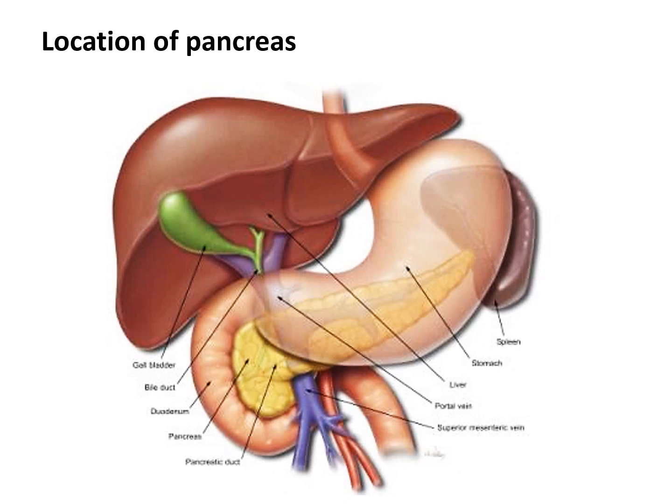The pancreas is an elongated accessory digestive gland. It lies retroperitoneally and transversely across the posterior abdominal wall, posterior to the stomach, between the duodenum on the right and the spleen on the left. The root of the transverse mesocolon lies along its anterior margin.